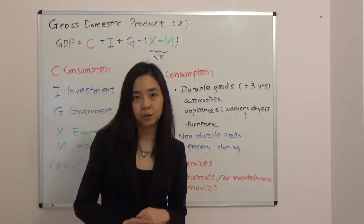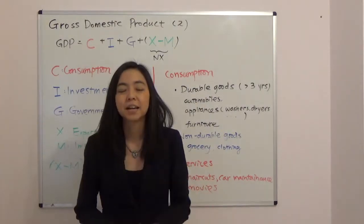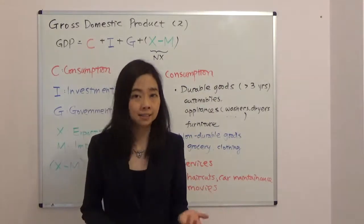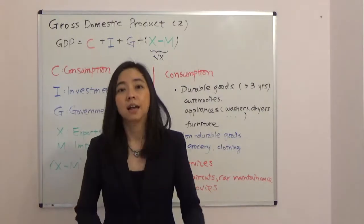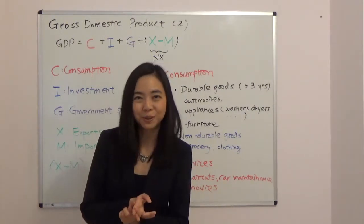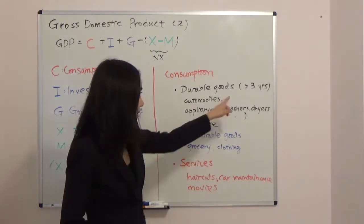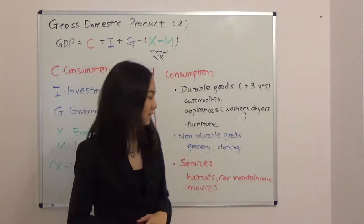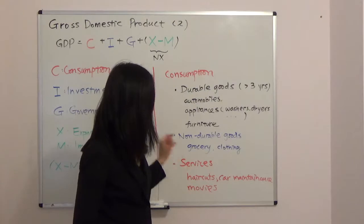The second item is non-durable goods. Think about things that don't last long, like your clothing and food—things you purchase from HEB that typically last less than three years. We call them non-durable goods.